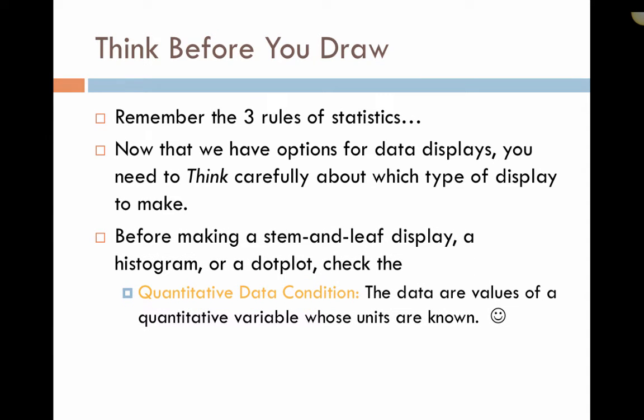Before we make a stem and leaf display, a histogram, or a dot plot, we have to check the quantitative data condition, which states that the data values are of a quantitative variable whose units are known. You want to make sure that you know exactly what the units are so that you're using quantitative data.